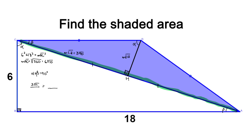Now we can set up our fraction. Here I'll put the base of our small triangle over the base of our large triangle. We have the height of our large triangle and we want to find the height of our smaller triangle, that is segment DH. We divide by 3: 18 divided by 3 is 6, so we just divide by 3 and we get the square root of 10, which is the length of segment DH.